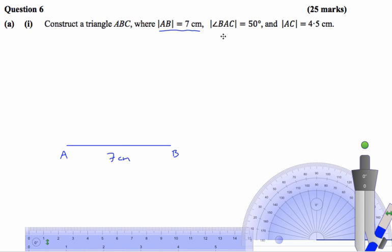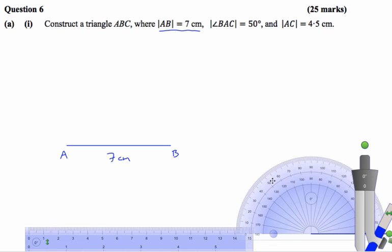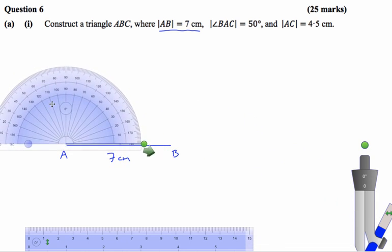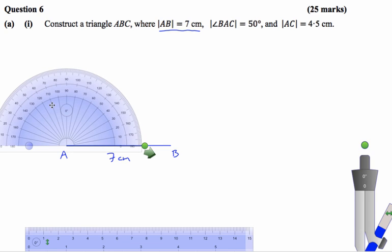Now the angle BAC was 50 degrees, so B to A and then up to C somewhere is 50 degrees. We're going to get our protractor center at A, because A is the middle letter, so that's where the angle will be measured.